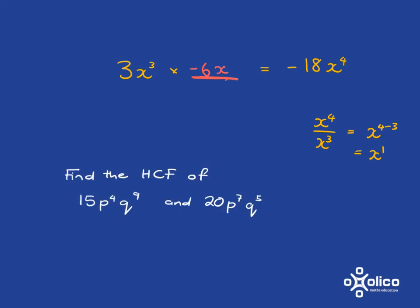So the other thing we want to get practice in is finding the highest common factor of two terms. So if we're asked to find the highest common factor of 15p to the 4q9 and 20p to the 7q to the 5, what we're asking is what's the largest thing that can divide into both of these two things. So we're going to deal with it bit by bit.